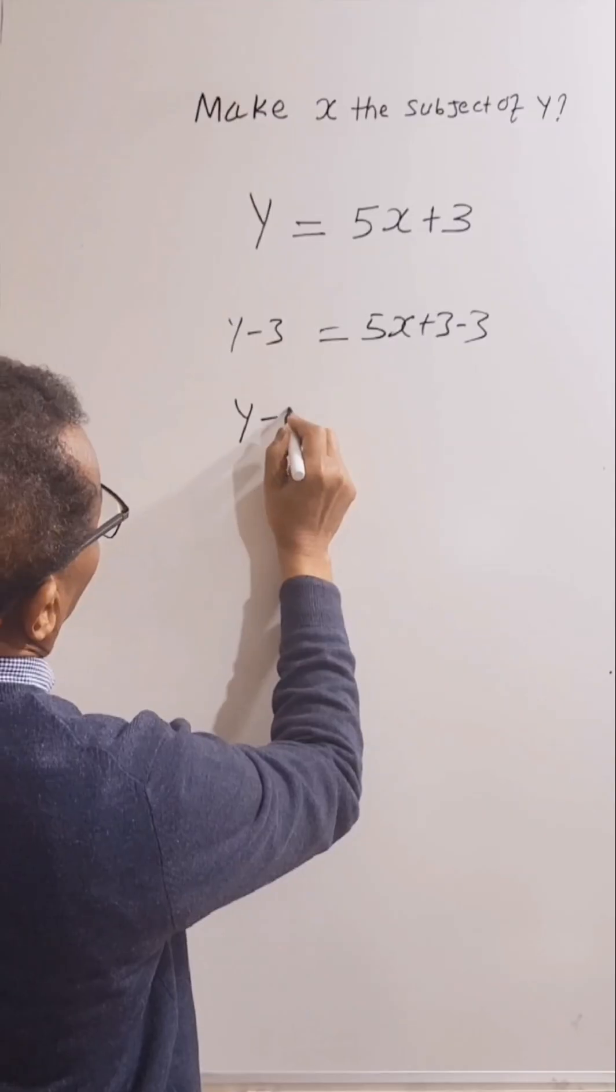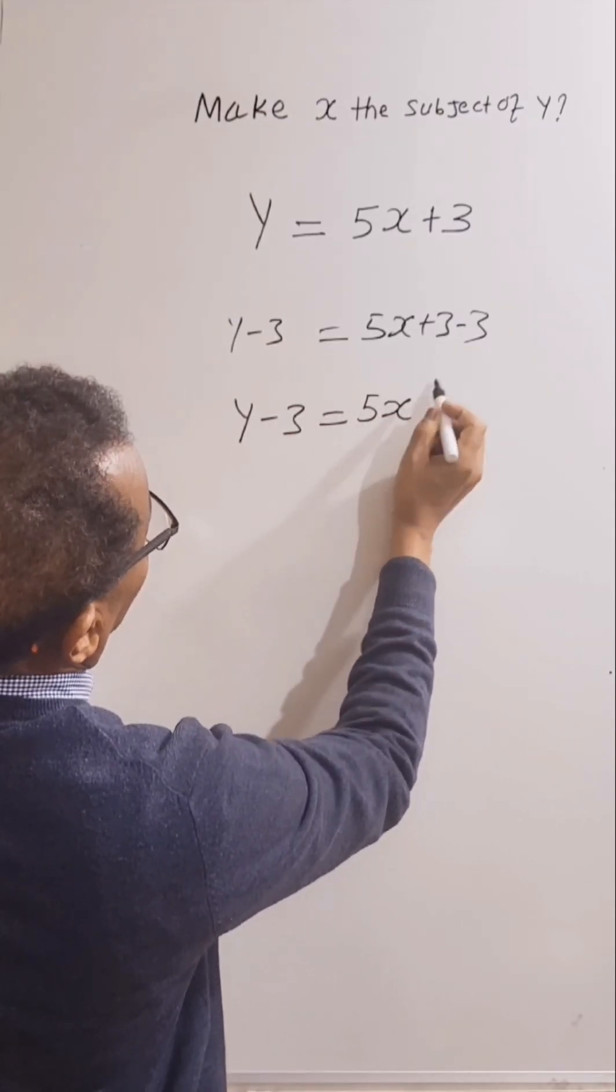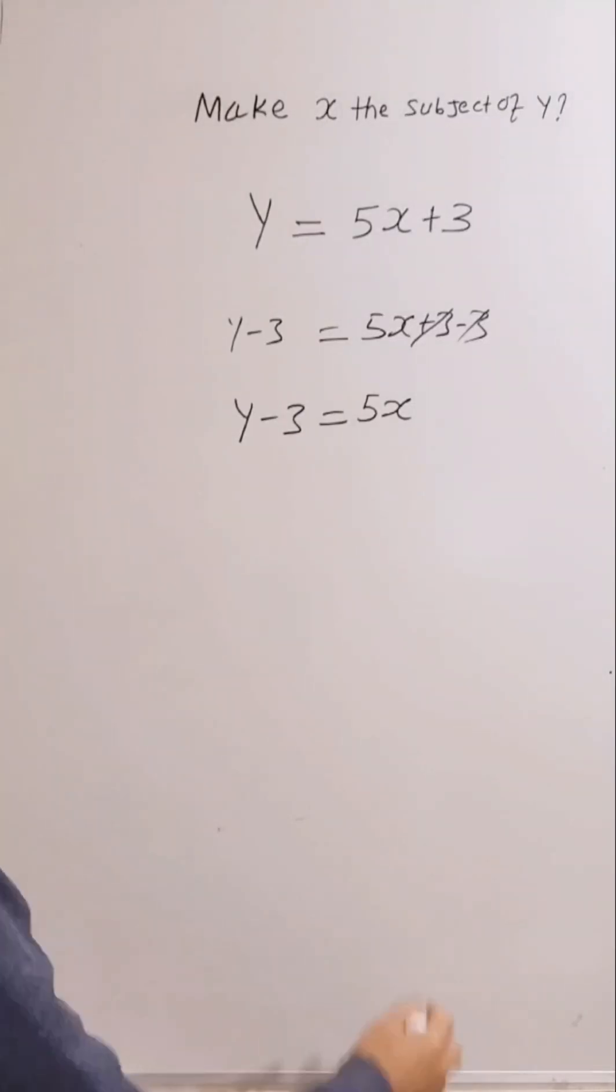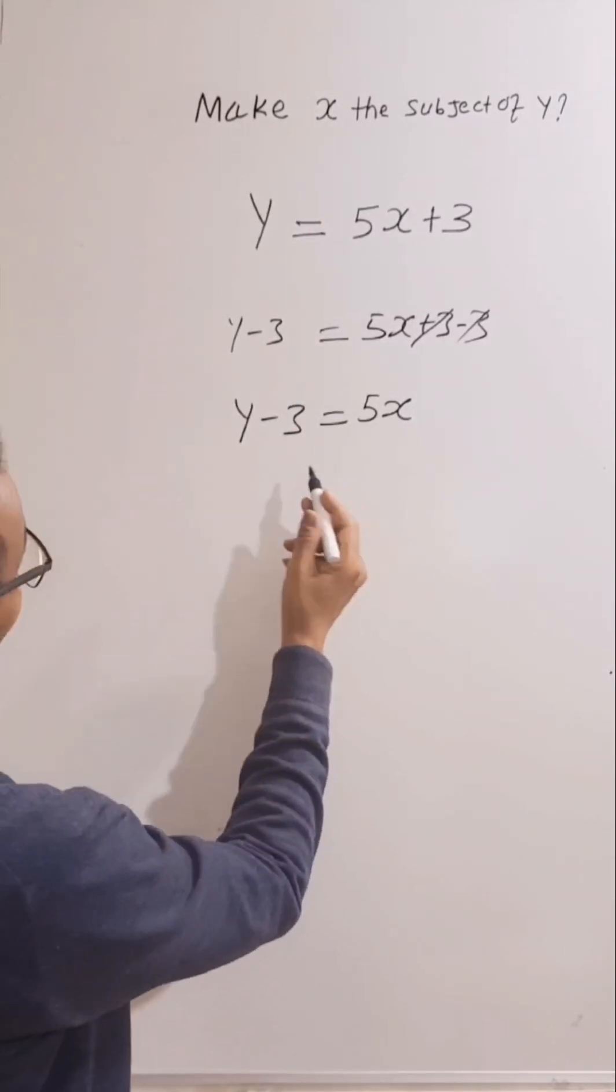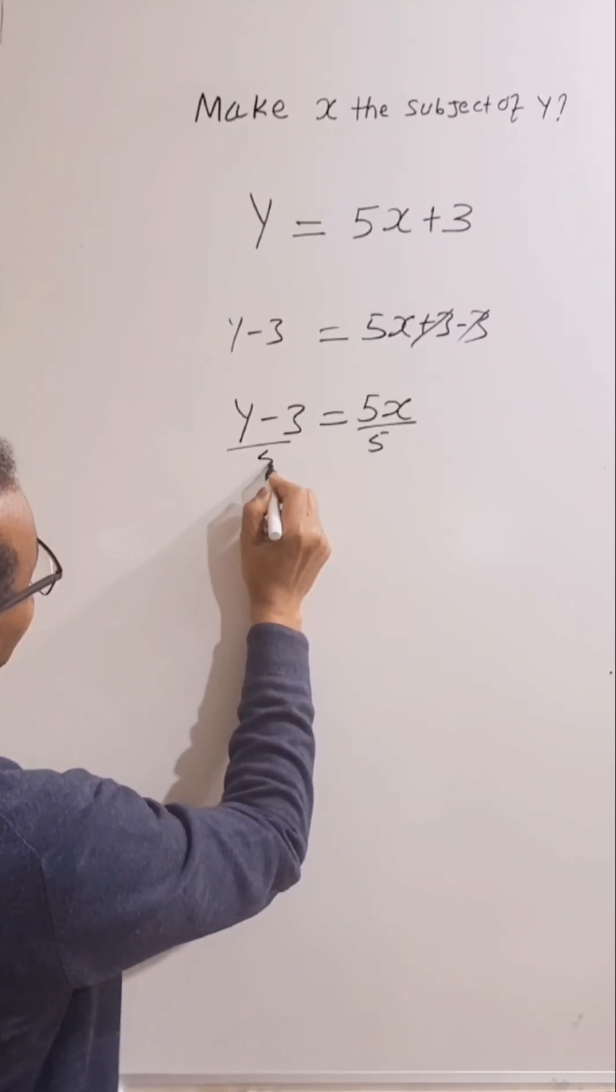So y take away 3, equal 5x, and this will be cancelled. So let's divide by 5 both sides. 5, 5.